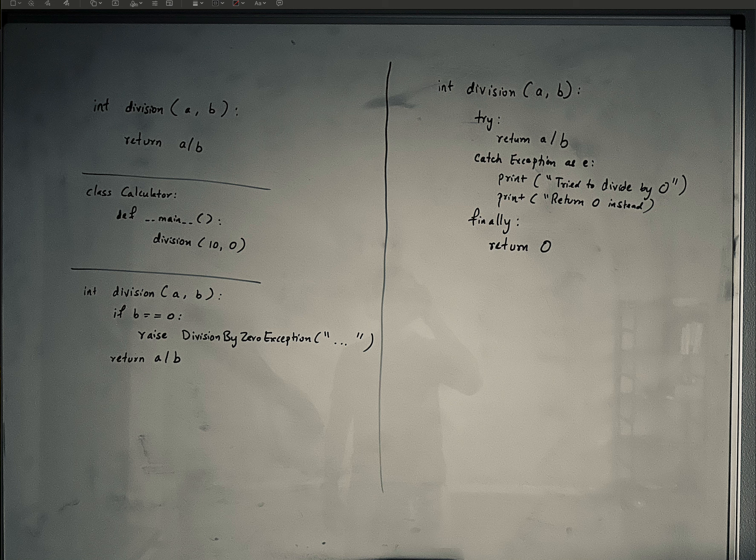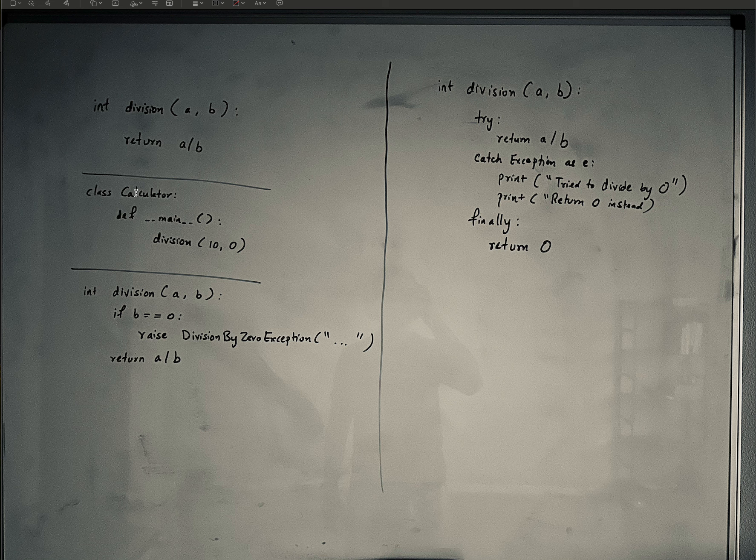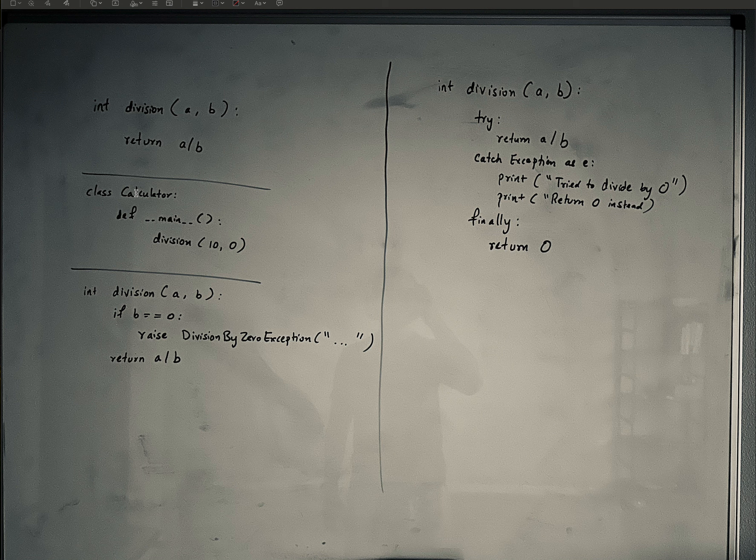There are different kinds of exceptions. There are built-in exceptions. Built-in exceptions are exceptions where certain exceptions are defined in the Python programming language itself. So these could be like syntax errors, indentation errors, zero division errors.